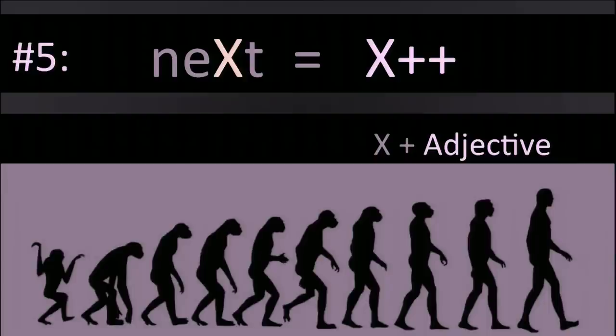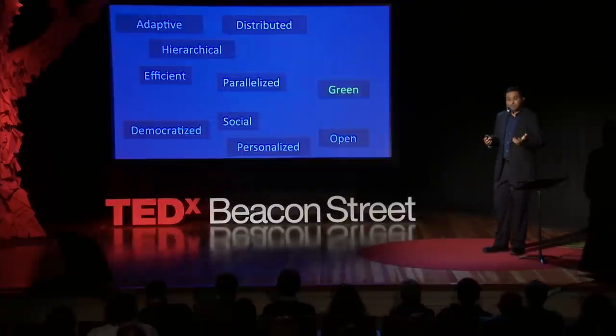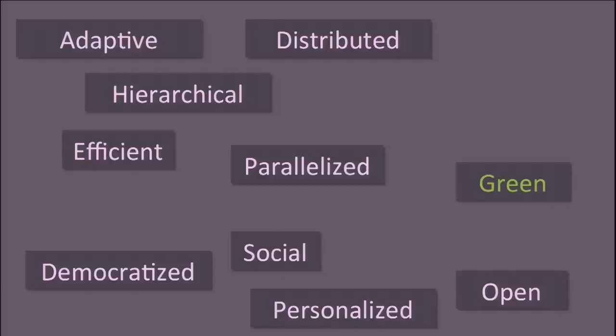So strategy number five is to take your original idea and add your favorite adjective. And the most common adjectives you would use are faster, better, cheaper, but there are some other ones that you can use. You can make it more adaptive, distributed, efficient, and some newer ones, such as Wikipedia is encyclopedia democratized, or Pandora is radio personalized.